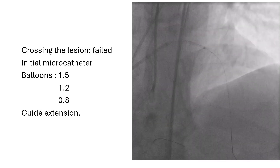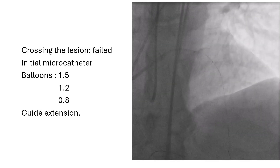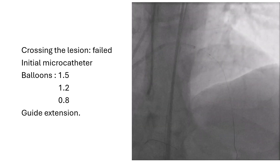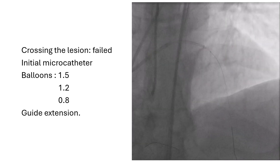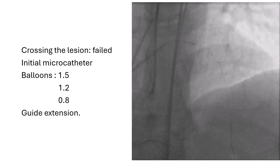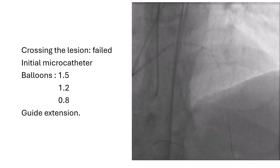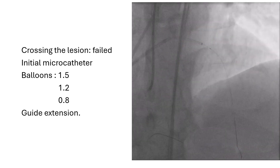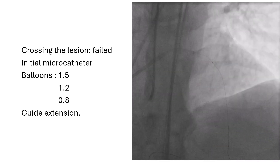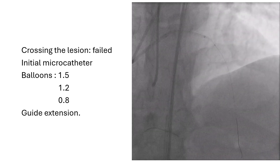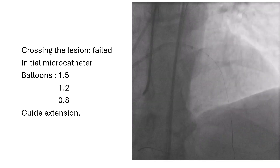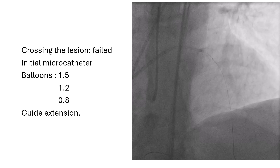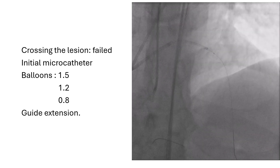Crossing the lesion then failed — even with the initial microcatheter, and using balloons of 1.5, 1.2, and the smallest balloon we had, 1.8. We couldn't cross the lesion even after using a guide extension. So we faced a situation of a balloon-uncrossable lesion and had utilized most of the algorithms except anchoring.